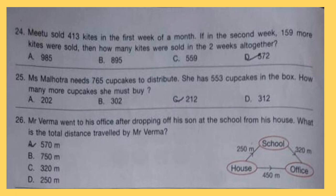Question 24: Meetu sold 413 kites in the first week of a month. If in the second week 159 more kites were sold, then how many kites were sold in the 2 weeks altogether?